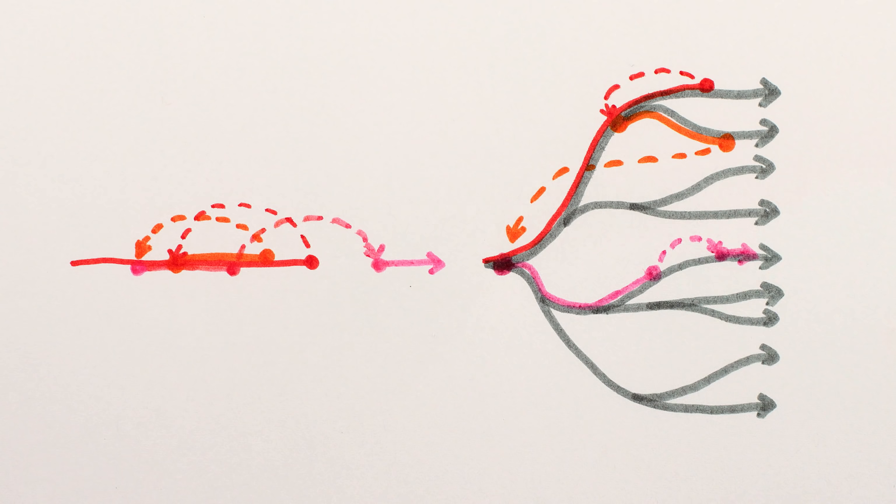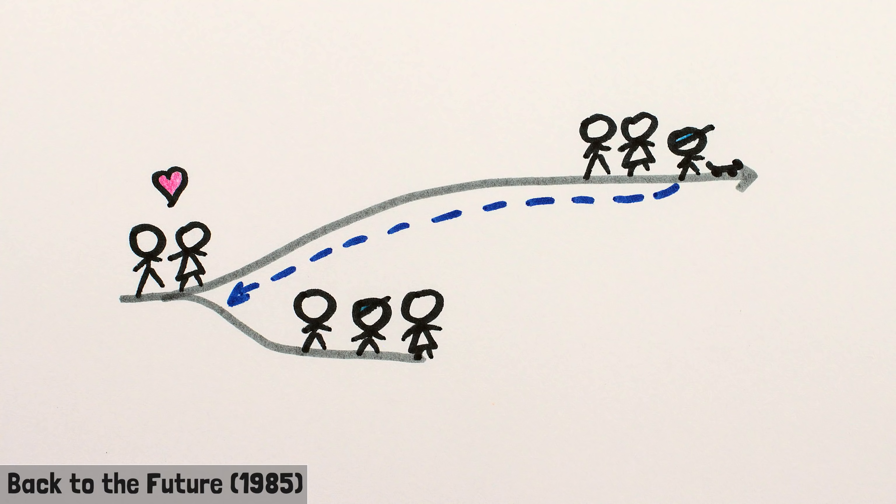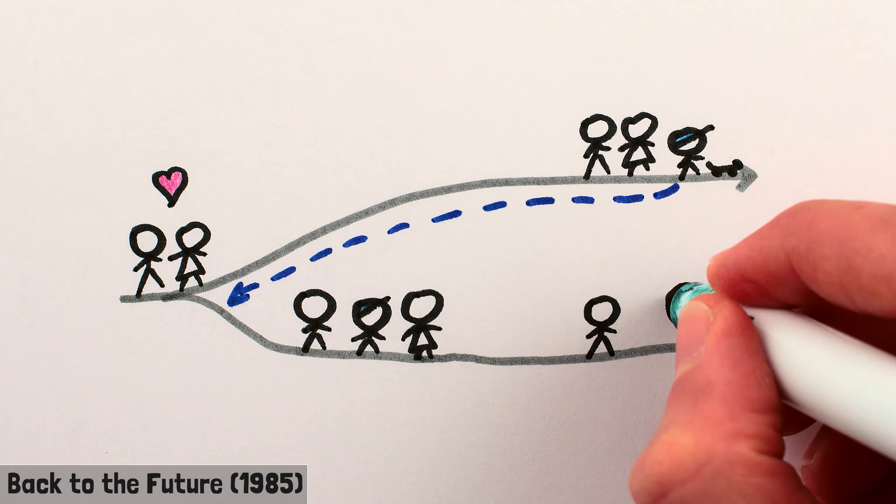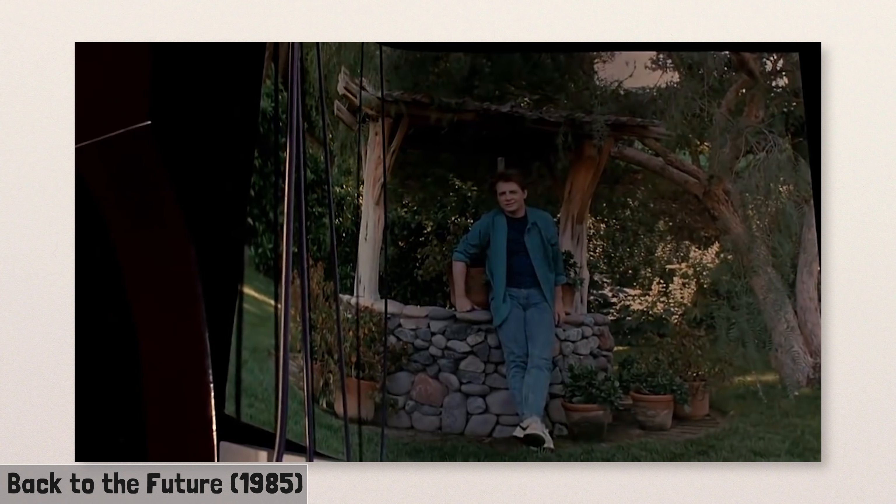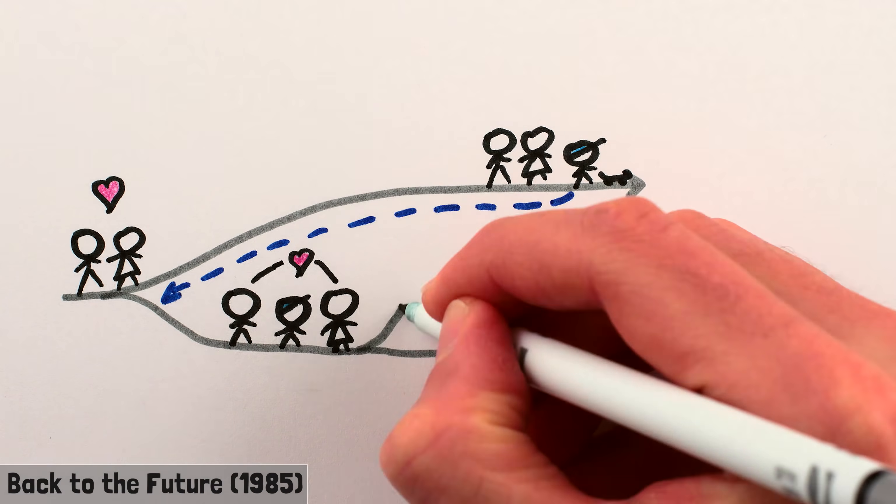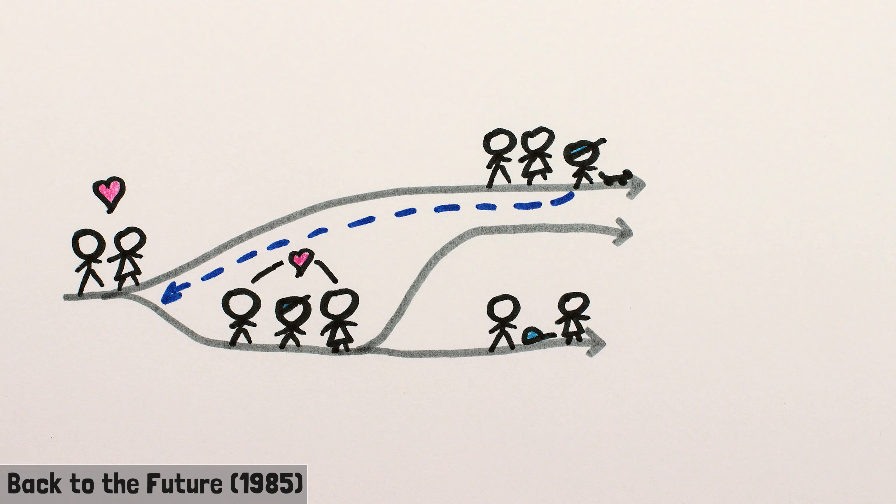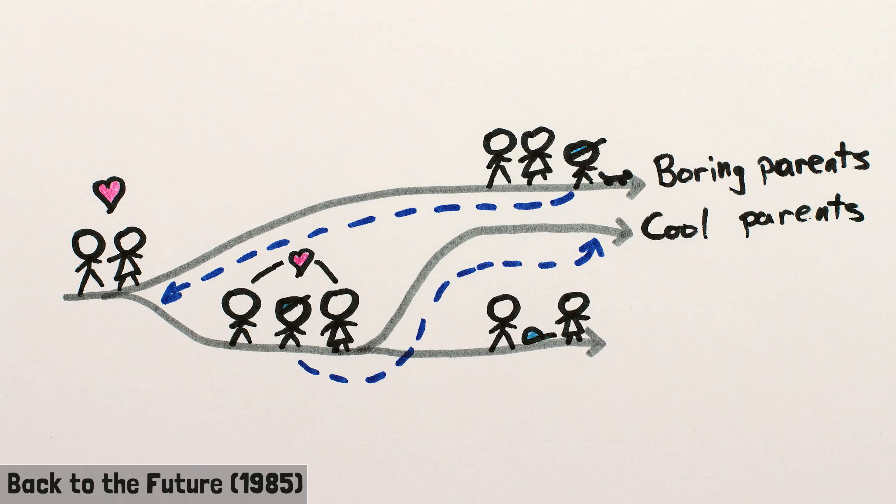In Back to the Future, Marty's interference with his parents falling in love results in the timeline of history being redirected towards a version of the future where he doesn't exist, and so he starts to disappear from photos and real life. Even after correcting that major deviation, his interactions with his parents while he's in the past result in them being very different people when he returns to his present time. He accidentally caused history to progress in a slightly different direction.